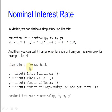And then you can call it from another function or from your main window, for example like this. You have the principal, the final value, the number of years, the number of compounding periods per year. And you call the function just with the parameters and the name of the function and the output variable.